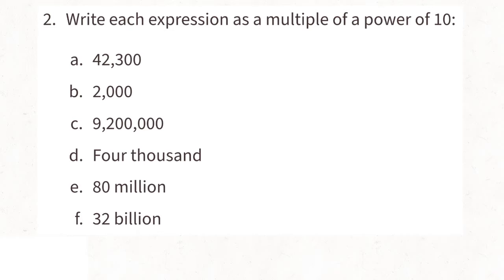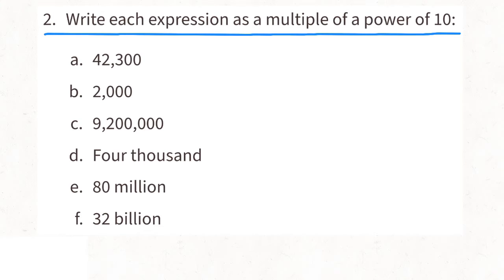Problem number two: write each expression as a multiple of a power of ten. A: you have 4, 2, and 3 followed by two zeros. Those two zeros mean the value of this number is 100 times larger than 423. So we can write 423 times 10 to the second power, because 10 to the second power means 10 times 10, which is 100. And 423 times 100 would be 42,300.